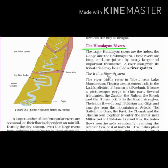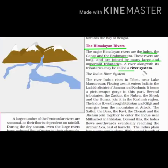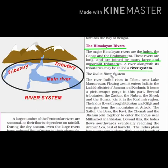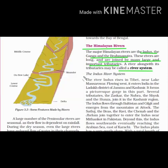Let's read about the Himalayan rivers in detail. The major Himalayan rivers are the Indus, the Ganga, and the Brahmaputra. These rivers are long and are joined by many large and important tributaries. A river along with its tributaries may be called a river system. Now let us read about the Indus river system.